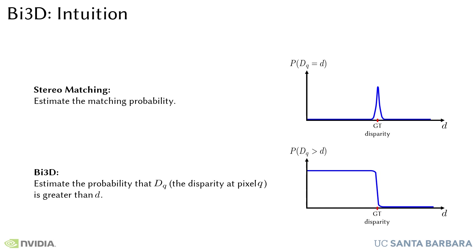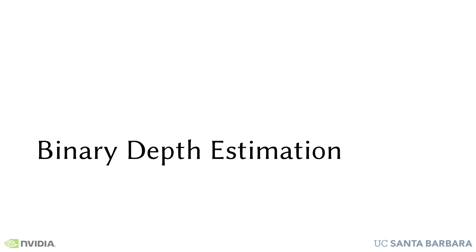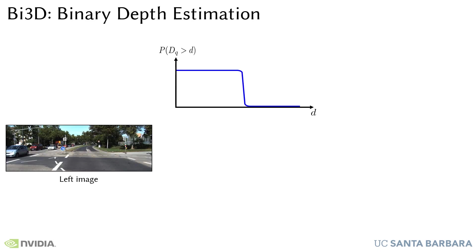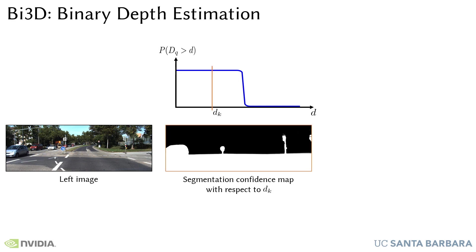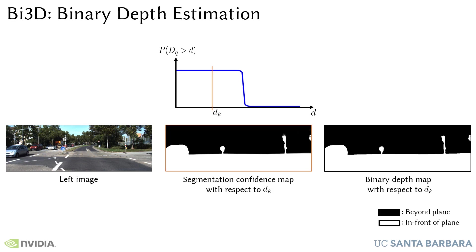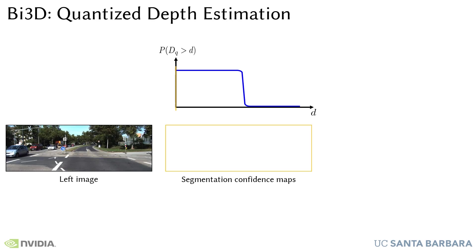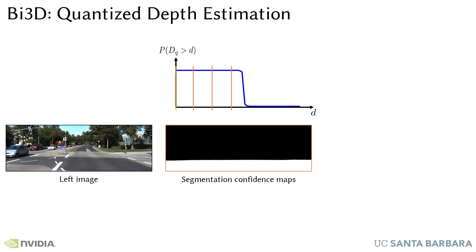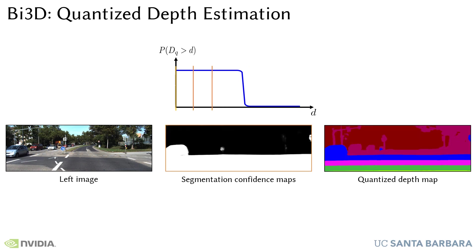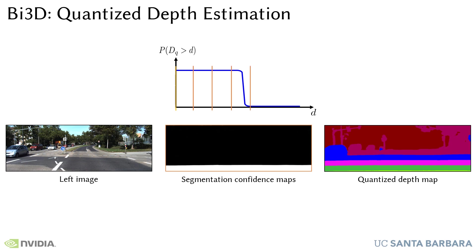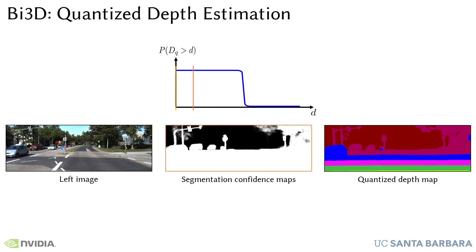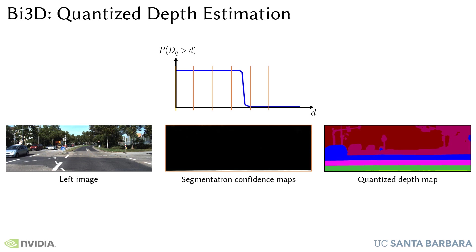Let's see how our approach gives us flexibility to trade off accuracy and latency at inference time. Estimating a segmentation confidence map with respect to a single plane in the scene and thresholding it gives us a binary depth map, providing one bit of depth information for the entire image in a few milliseconds. We can use a sparse number of planes and generate multiple binary segmentation confidence maps, then combine them to produce a coarsely quantized depth without sacrificing spatial resolution. The computation required grows linearly with the number of planes, and so does the number of quantization levels.